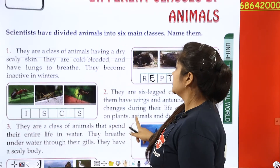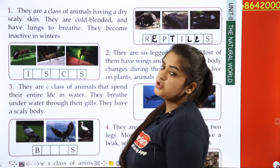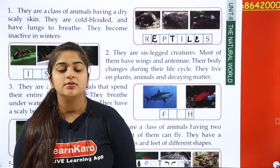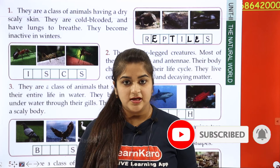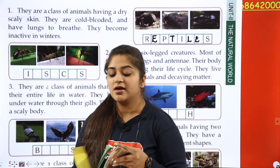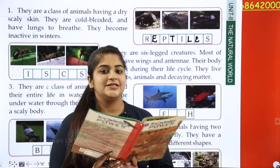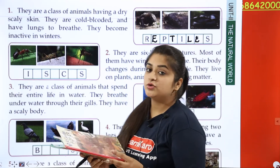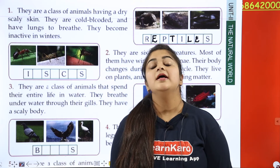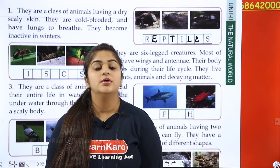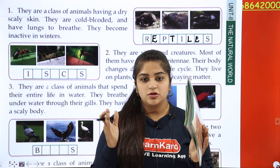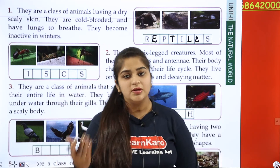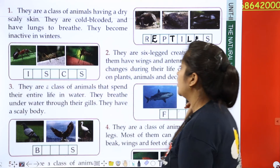Now let's go to the second class. These are six-legged creatures. Most of them have wings and antennae — wings to fly, and antennae on their heads. Their body changes during their life cycle, just like a human baby: when small, the body is small, and as they grow, their hands, legs, and face grow. Similarly, these animals' bodies change during their life cycle.